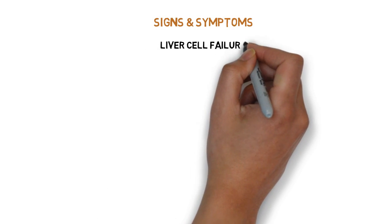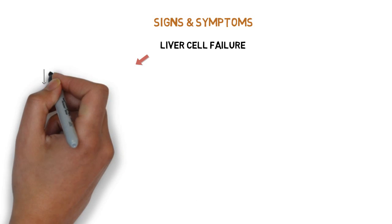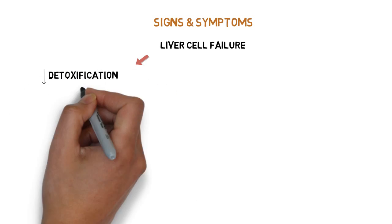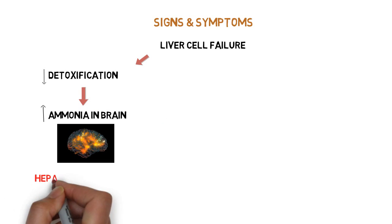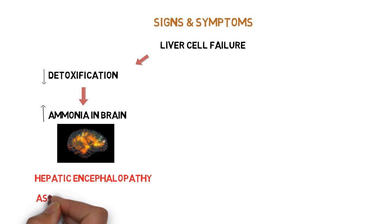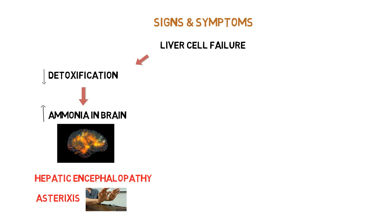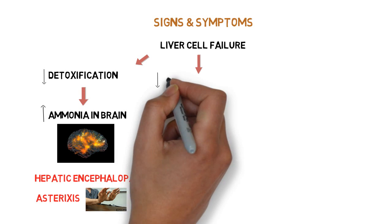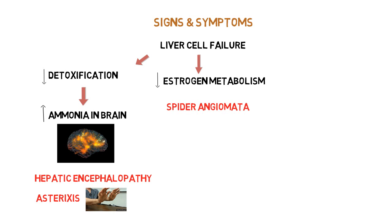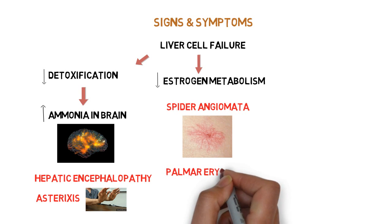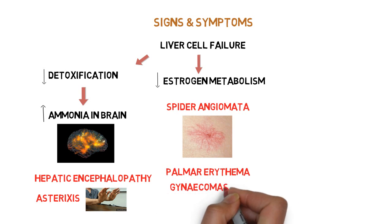Now the signs and symptoms due to liver cell failure: there is decreased detoxification by the liver, which causes accumulation of toxic metabolites like ammonia in the brain, leading to hepatic encephalopathy. Patients might develop asterixis, where they have tremoring or jerky hands when outstretched. There also occurs decreased estrogen metabolism, which causes spider angiomata — often containing a central red spot with reddish extensions radiating outwards like a spider's web. Palmar erythema and gynecomastia can also occur.